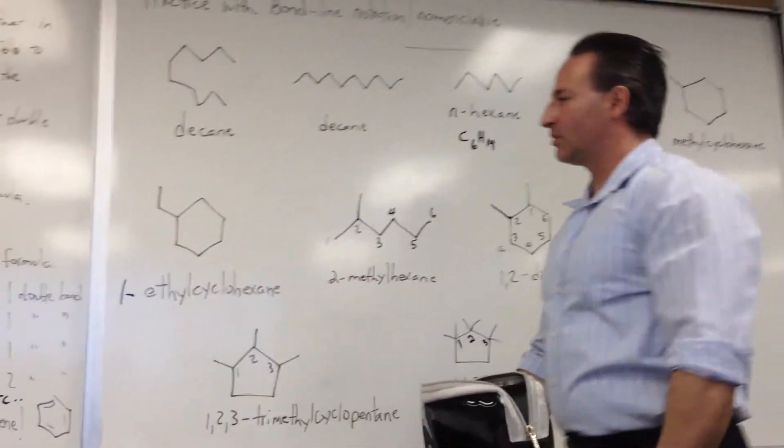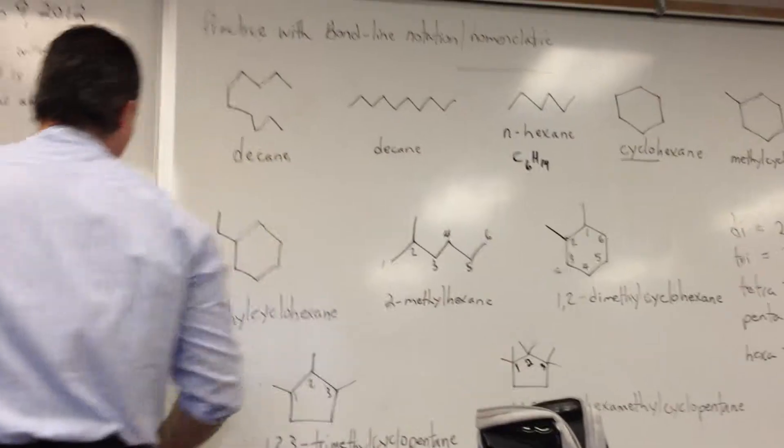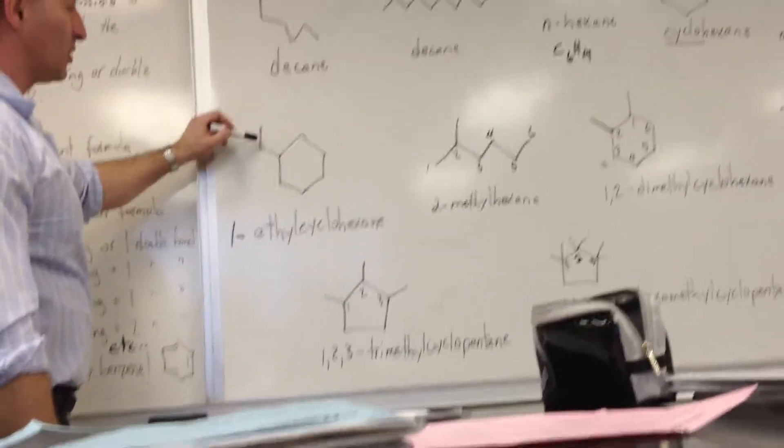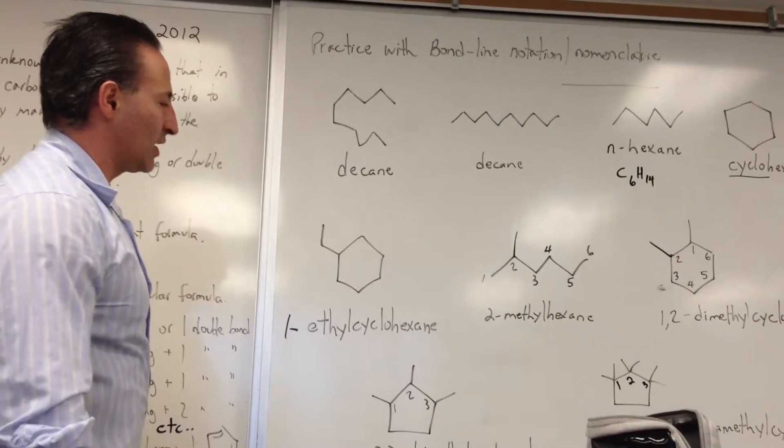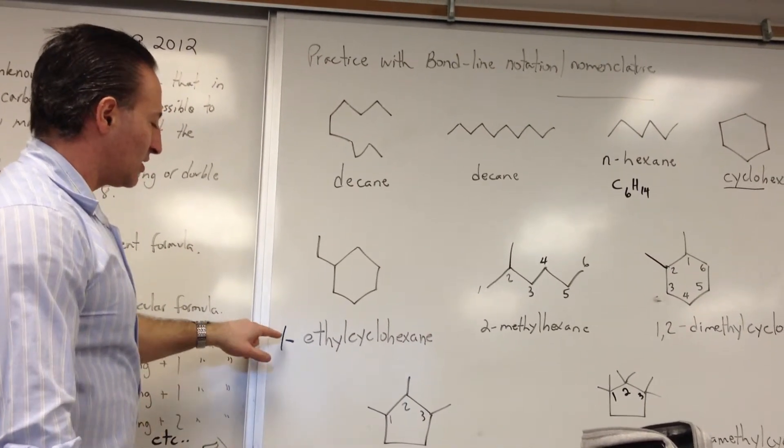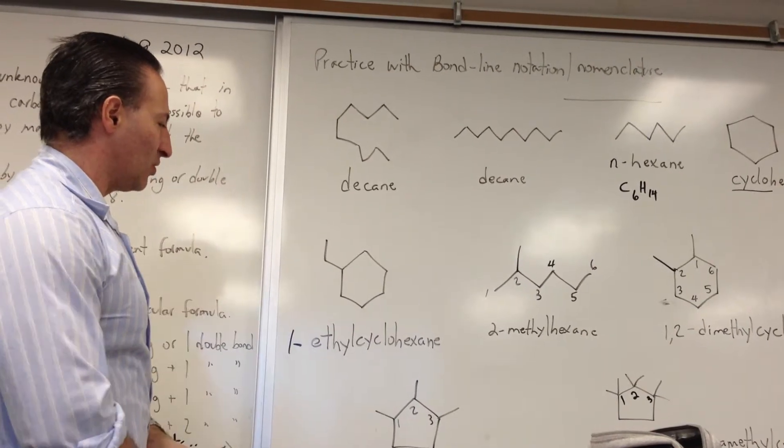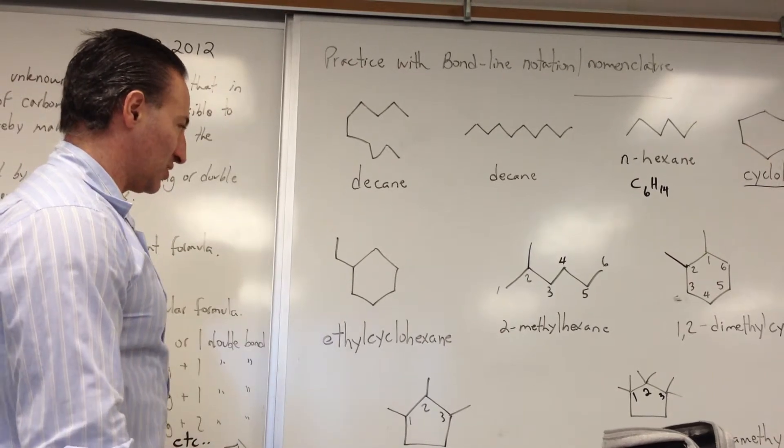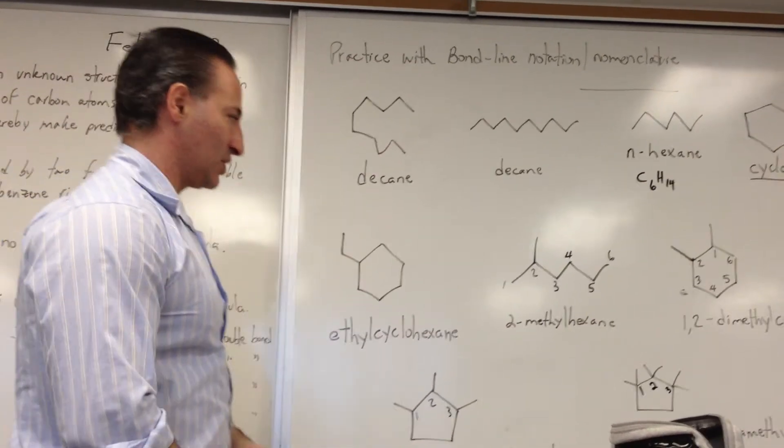Here we have another example with the cyclohexane skeleton. We've added an ethyl group, so we call it ethyl cyclohexane. Sometimes you might see one ethyl cyclohexane, but if there's only one substituent on the whole ring, then we can dispense with writing the one, and it's understood that there's only one substituent, and wherever it is, is the first position.